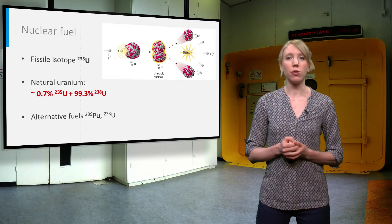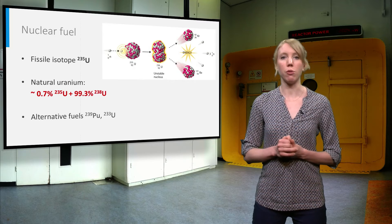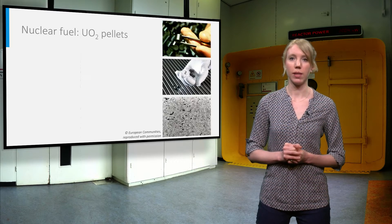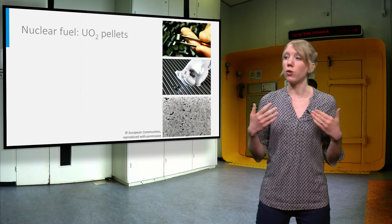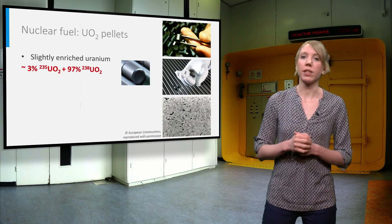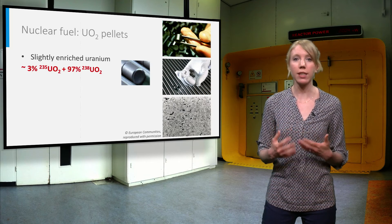Alternative fuels can use the isotopes plutonium-239 or uranium-233, but these do not occur in nature. Metallic uranium was used in the early reactors as nuclear fuel. However, metallic uranium is particularly sensitive to irradiation effects.